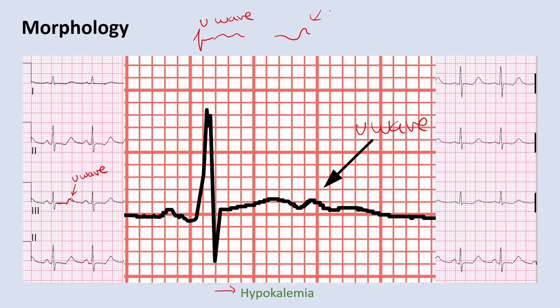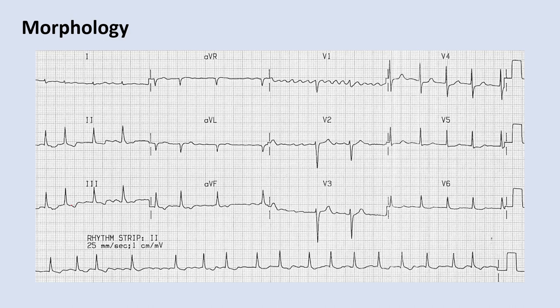This patient has an irregularly irregular rhythm with no clear P wave in lead 2, and in V1 you can see a fibrillating baseline. This is atrial fibrillation. Counting the QRS complexes — 17 complexes — times 6 gives a heart rate of 102. This qualifies as atrial fibrillation with rapid ventricular response, or AFib with RVR, because the heart rate is above 100.